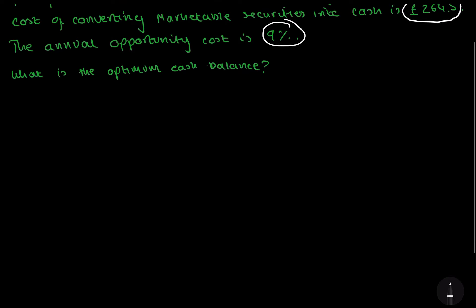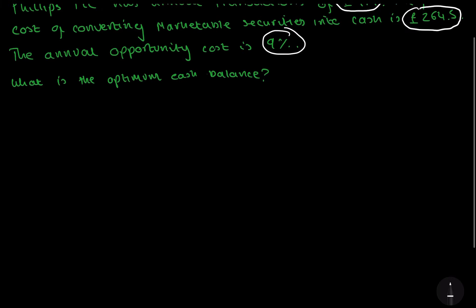Let's write down the formula to work out the optimum cash balance. As you can probably remember, optimum cash balance C star is 2 times the total cash needed times the fixed cost over the opportunity cost, all square rooted. And like I said, if you want to figure out why that is the formula, check out the video.